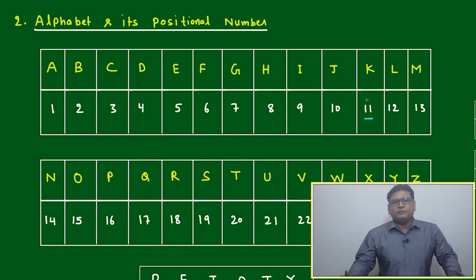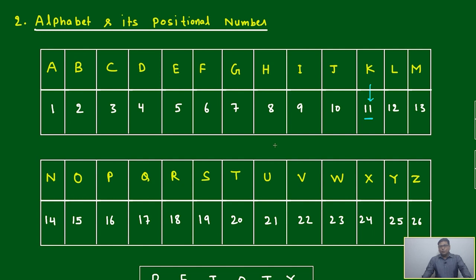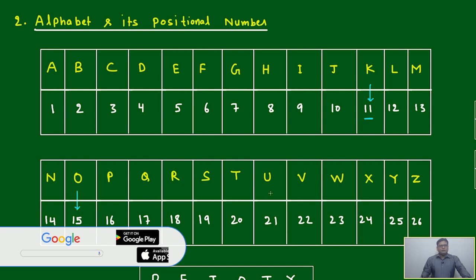It will be easy if K is representing 11, then it will be easy to understand others. I will give you a technique, or you can say one of the codes, to remember all these 26 alphabets.